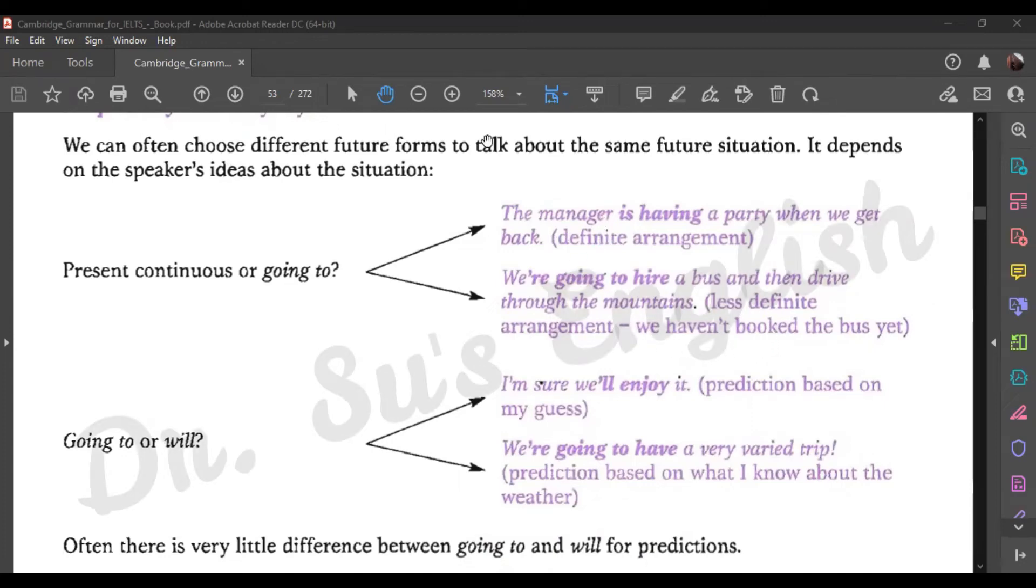I think we already talked about the difference. This one, the manager is having a party when we get back. This is a definite arrangement. Why definite? Because the present continuous represents the highest likelihood.